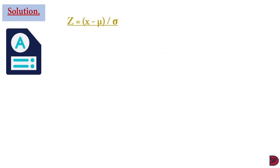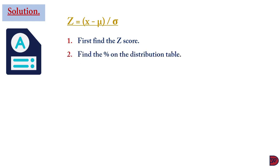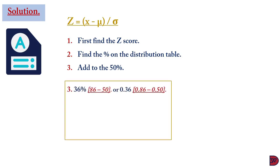For the solution, we state the z-score formula again. The procedure is: find the z-score using the formula, use it to find the percentage from the distribution table, then add to or subtract from 50%. The figure has already been given as 86%, meaning something was added to 50%. When we remove 50%, we get 36%, which is 0.36.